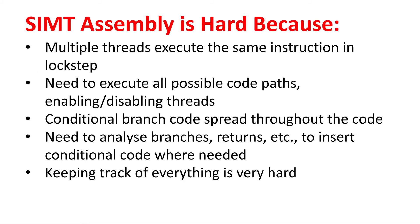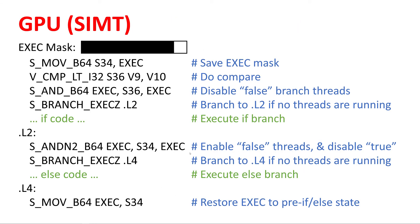Quick summary: SIMT assembly writing is hard because of the architecture. You've got multiple threads executing the same instruction in lockstep. That means you need to execute all possible code paths, enabling and disabling the threads that shouldn't be running them, unless every single thread needs to execute exactly the same code. Conditional branch code also spreads throughout the code - with CPU code you've got a compare and then simple branches to go to if and else, but here you start with a compare then you're twiddling execution bits.